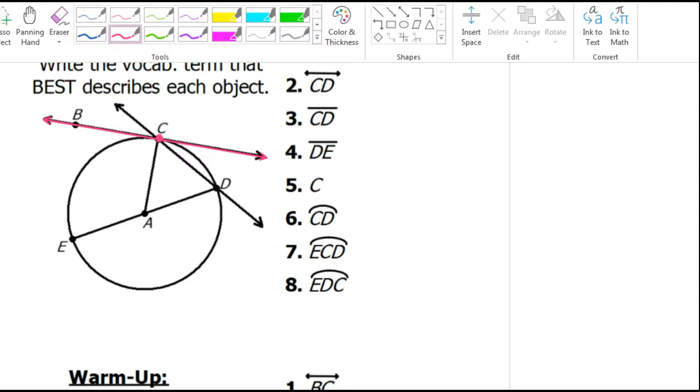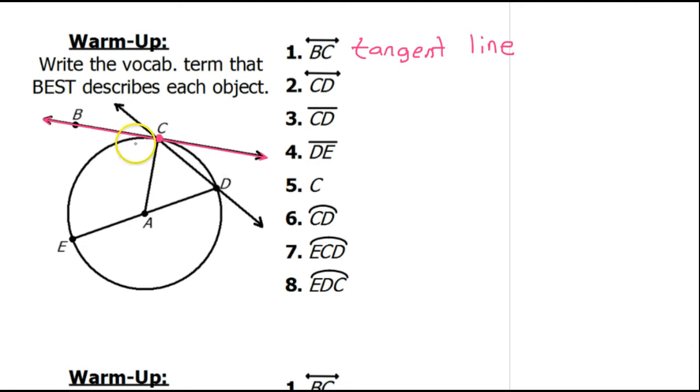Now on the other hand, while we're at it, notice that the point at which the line touches is point C. That's why, skipping down to number 5, point C is the point of tangency.